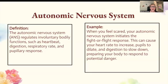The autonomic nervous system (the ANS) regulates involuntary bodily functions, such as your heartbeat, digestion, respiration rate, and pupillary response. When you feel scared, your autonomic nervous system initiates the fight-or-flight response. This can cause your heart rate to increase, pupils to dilate, and digestion to slow down, preparing your body to respond to the potential danger.